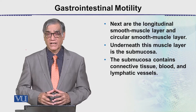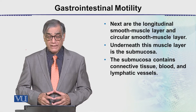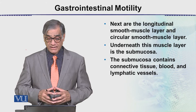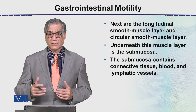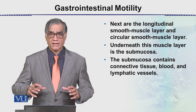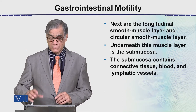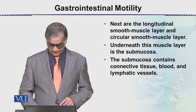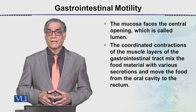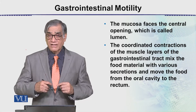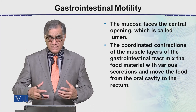The submucosa contains connective tissue, blood vessels, and lymphatic vessels. The mucosa faces the central cavity, which is called the lumen — that is, the cavity of the tube or intestine through which food moves.